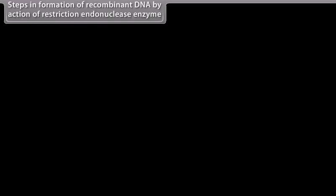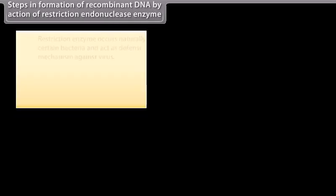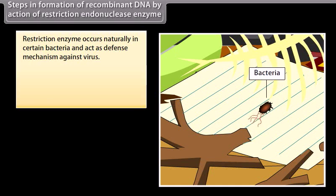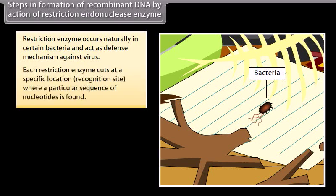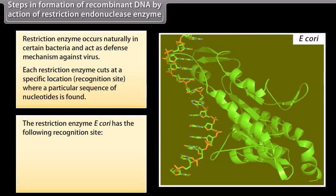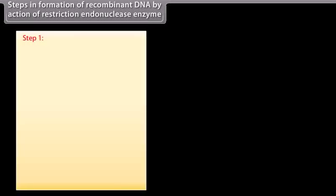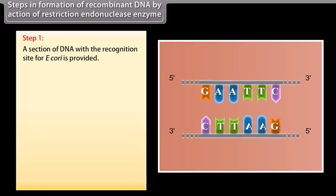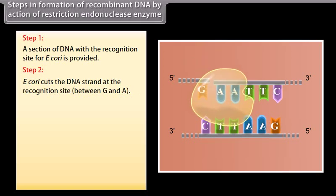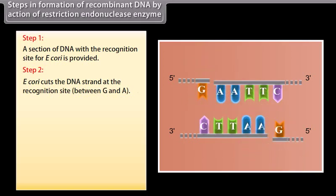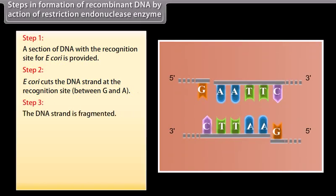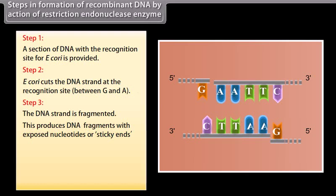Steps in formation of recombinant DNA by action of restriction endonuclease enzyme. Restriction enzymes occur naturally in certain bacteria and act as a defense mechanism against viruses. Each restriction enzyme cuts at a specific location — the recognition site — where a particular sequence of nucleotides is found. The restriction enzyme EcoRI has the following recognition site: G-A-A-T-T-C / C-T-T-A-A-G. EcoRI will only cut between G and A in this sequence. Step 1: a section of DNA with a recognition site for EcoRI is provided. Step 2: EcoRI cuts the DNA strand at the recognition site between G and A. Step 3: the DNA strand is fragmented, producing DNA fragments with exposed nucleotides, or sticky ends.